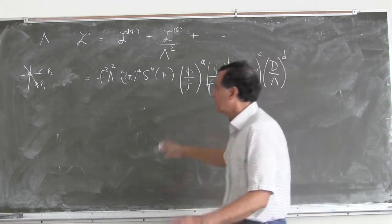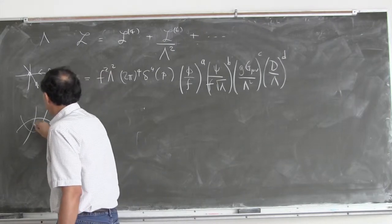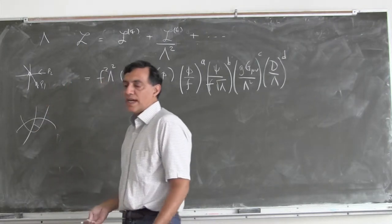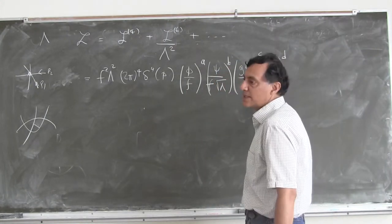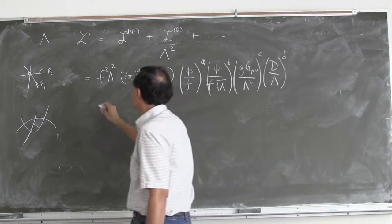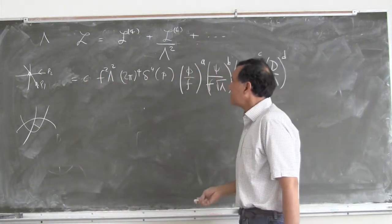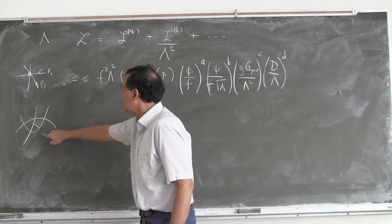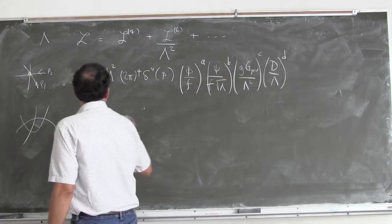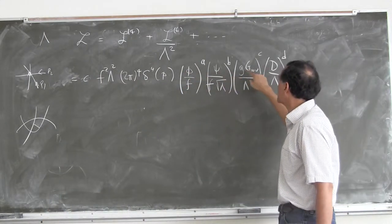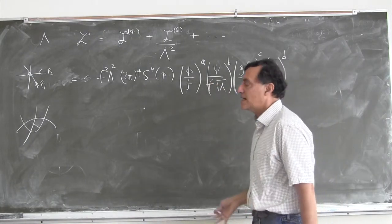To see this, just construct some random diagram and work out what you get. Suppose all my vertices have this power counting — they have this structure with some order-1 coefficient c in front. Look at the amplitude generated for a diagram with some number of external phi lines, some psi lines, some field strength tensors, and covariant derivatives, producing a generic operator of this kind.